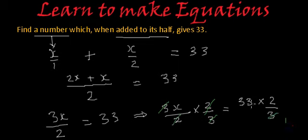3 ones are 3 and 3 ones are 3, 3 ones are 3. So what we get from here? On the left hand side we have only x which will be equal to 11 multiplied by 2 that is 22. So this is the solution and you can say this was the equation.